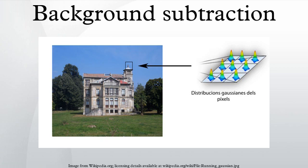The parameter alpha determines the size of the temporal window used to fit the PDF, and the Euclidean distance between the mean and the value of the pixel is used in the update. We can classify a pixel as background if its current intensity lies within some confidence interval of its distribution's mean, where the parameter is a free threshold. A larger value allows for more dynamic background, while a smaller value increases the probability of a transition from background to foreground due to more subtle changes. In a variant of the method, a pixel's distribution is only updated if it is classified as background, to prevent newly introduced foreground objects from fading into the background.